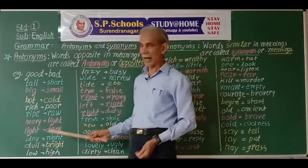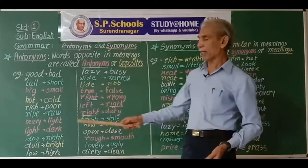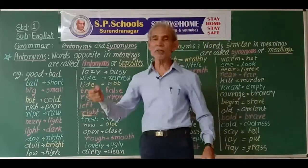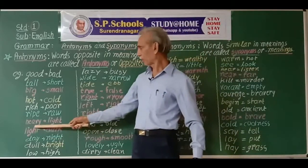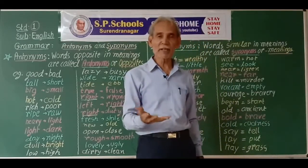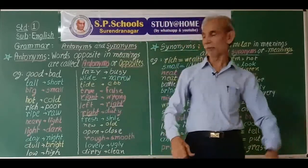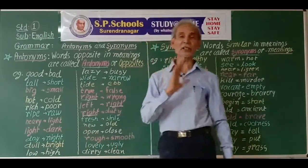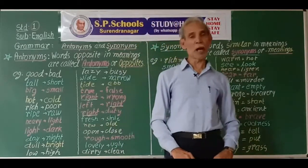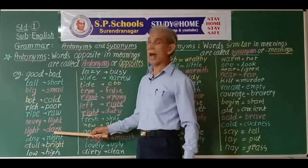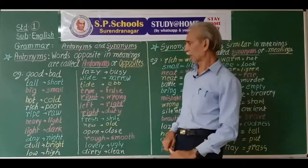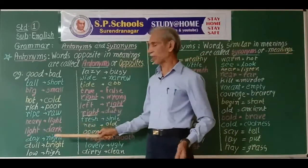Heavy and light are opposites. The bag was very heavy. Light means not very heavy. But light also has other meanings — light in the sense of sunlight, daylight, moonlight, candlelight, fluorescent light. Dark is the opposite of light in the sense of sunlight. So light means not very heavy, and light also means brightness.